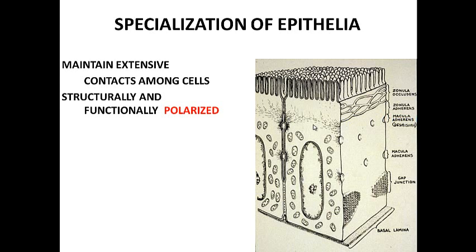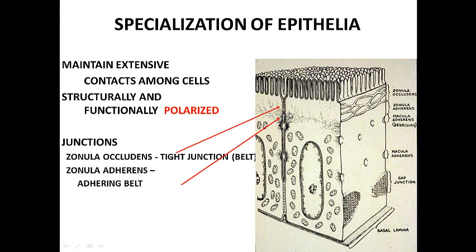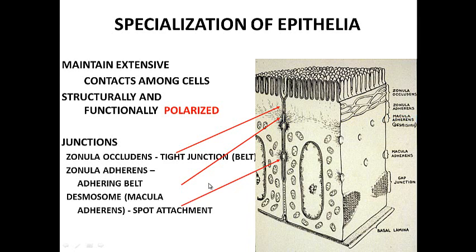Epithelium is specialized and polarized, and the junctions are what make them polarized. They have an apex and a base, with a basal lamina at the very base. There is a series of junctions: there's a zonula occludens — a belt that goes all the way around, a tight junction that prevents things from going through. There's also a zonula adherens, which is an adhering belt that interacts with high-density microfilaments to support the fusion of the membranes.